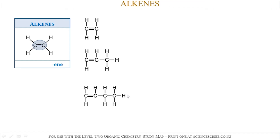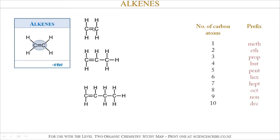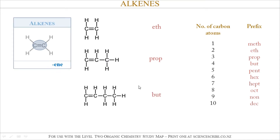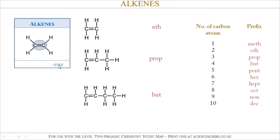To name these alkenes, we always look for the longest chain in our molecule which contains the carbon-to-carbon double bond. A table is shown here which gives a clue as to what prefix to use. In the first example, my longest chain is only 2 carbon atoms long, so that corresponds to 'eth'. In the second example, it's 3 carbon atoms, so 'prop', and 'but' for the third one. Since alkenes all have the ending '-en', this means my first three examples are ethene, propene, and butene.